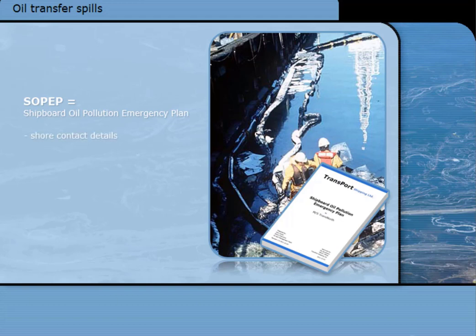The SOPEP will contain shore contact details, so the master can make a report if there has been, or is likely to be, an oil spill. In addition, the SOPEP should provide a detailed description of the actions to be taken immediately by persons on board to reduce or control the discharge of oil following any of the types of incident mentioned above. On most ships, special oil cleanup equipment will have been supplied, and its location recorded in the plan.